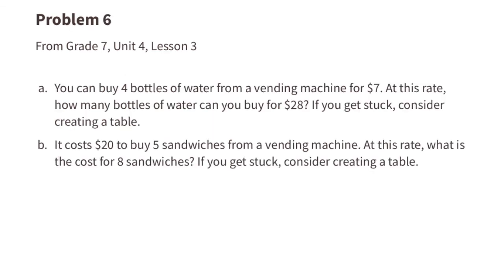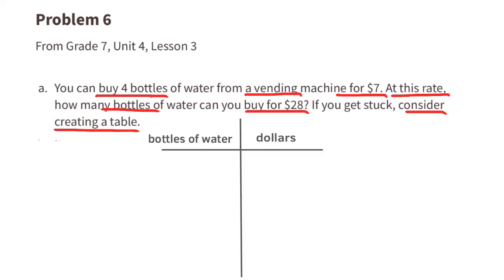Problem number 6. From 7th grade, Unit 4, Lesson 3. A. You can buy 4 bottles of water from a vending machine for $7. At this rate, how many bottles of water can you buy for $28? If you get stuck, consider creating a table.